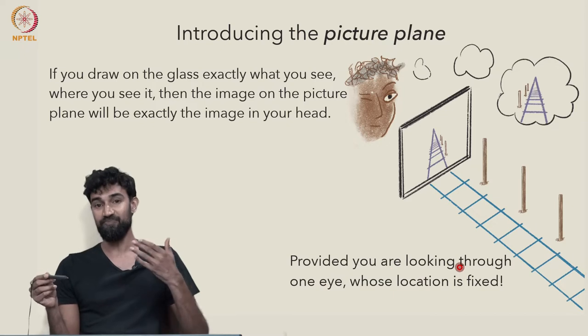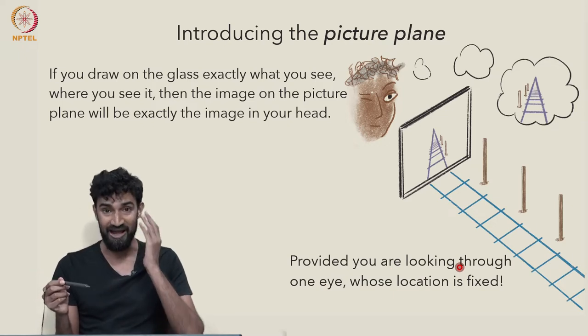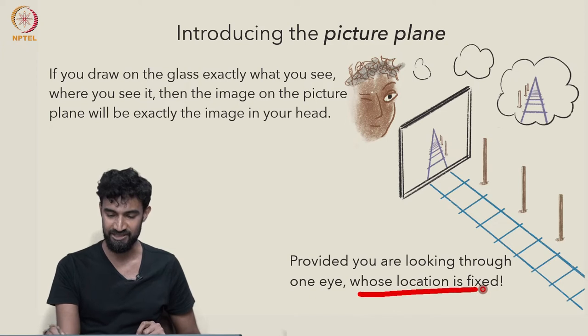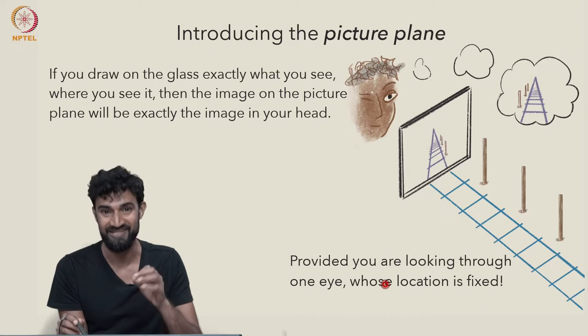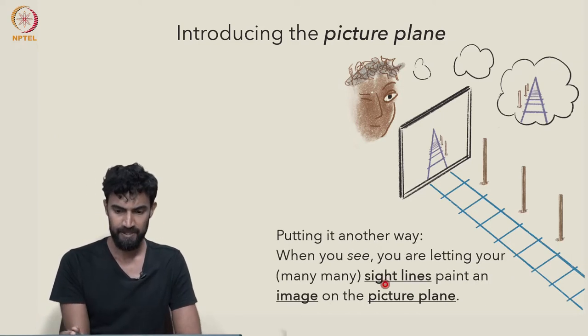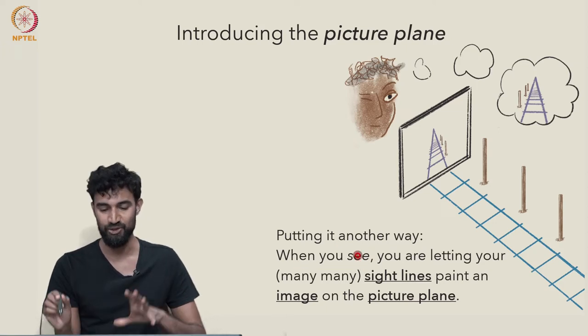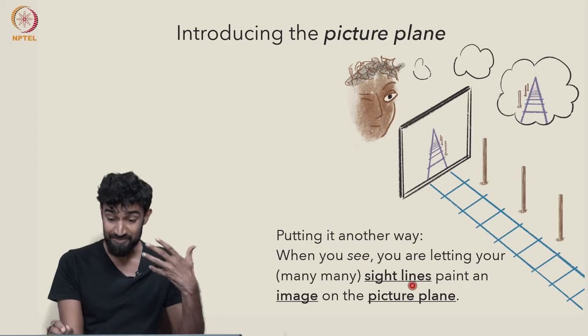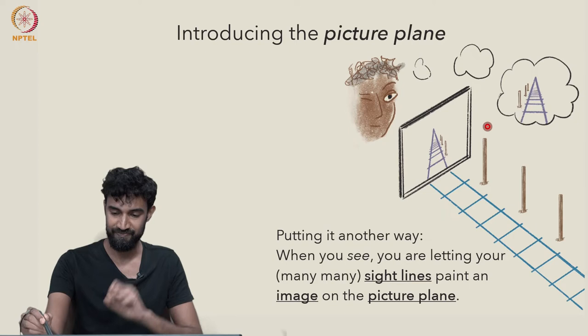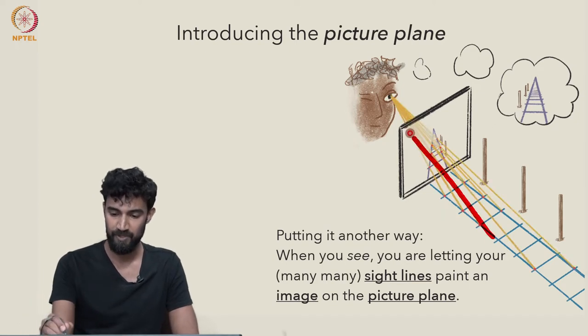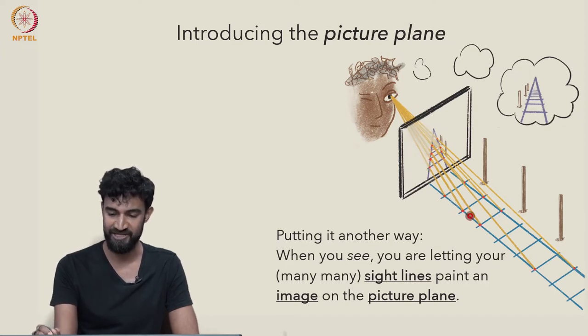Provided you're looking through one eye with the other eye fixed, the other eye will be closed. So just to put it another way, when you see, you're letting your many, many sight lines paint an image on the picture plane. Your many, many sight lines are all intercepting the picture plane at different points and creating these image points of various points in space.